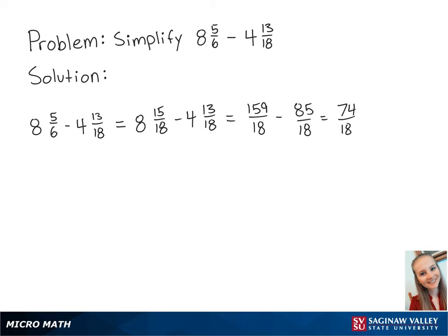Finally, we need to convert the fraction back into a mixed number. 18 goes into 74 four times with two parts left over. So, now we have 4 and 2 eighteenths.